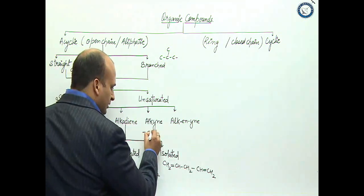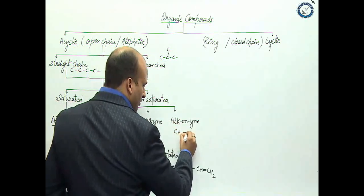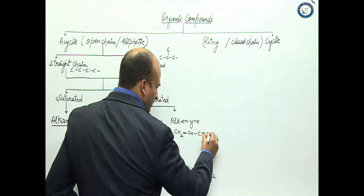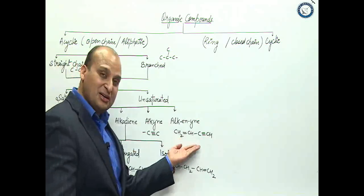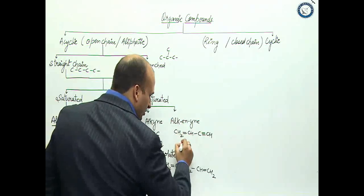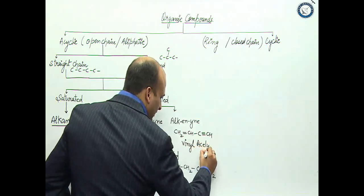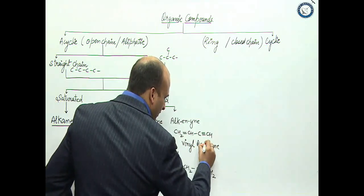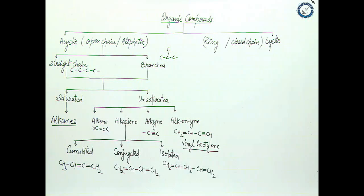Alkenyne has both double and triple bonds, like CH2=CH-C≡CH. This is an important compound that has been asked many times. The common name of this compound is vinyl acetylene. This has been asked many times. So this is vinyl acetylene. I hope you have understood this part.